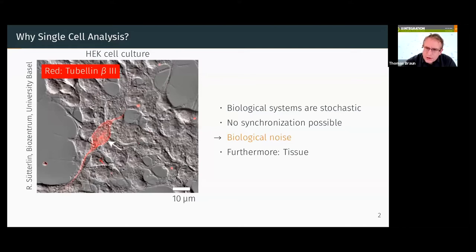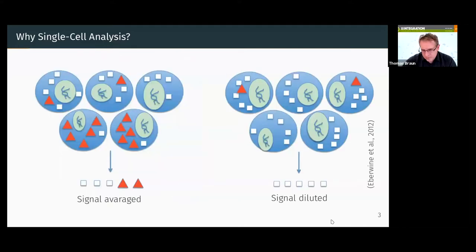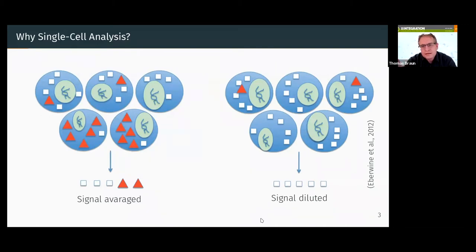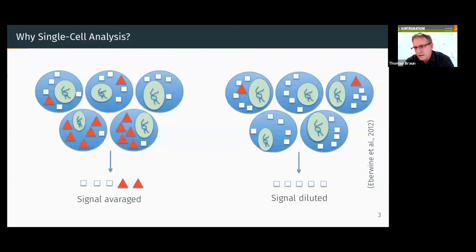This leads to several problems from the methodological point of view. We have signal averaging — the signal we measure when we have a population of cells is not necessarily found in the individual cell. It's just an average. Or we have signal dilution, which means that we lose rare events like what we have seen before.